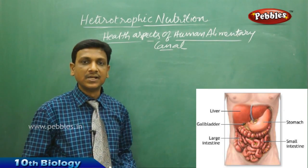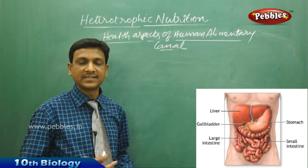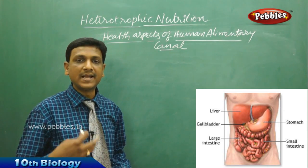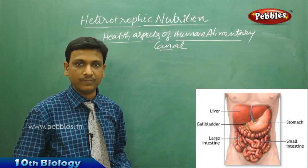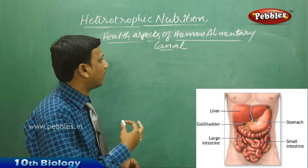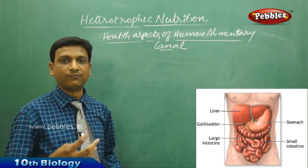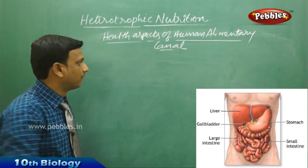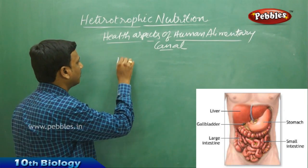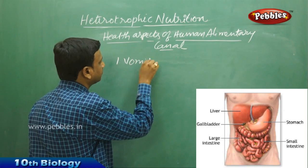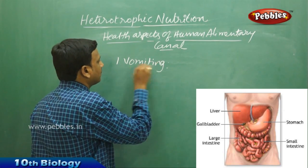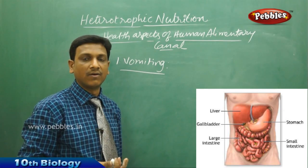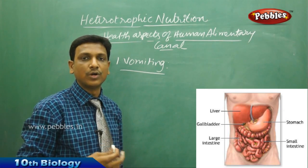But sometimes, due to taking an excess amount of food, poisonous food, or inappropriate food, it leads to some malfunctioning or false conditions inside the alimentary canal. The first condition we observe is vomiting. Vomiting is a process of expelling or repelling food out of the stomach.